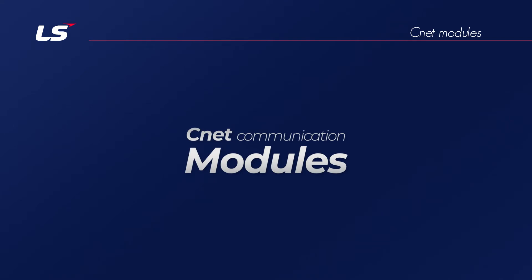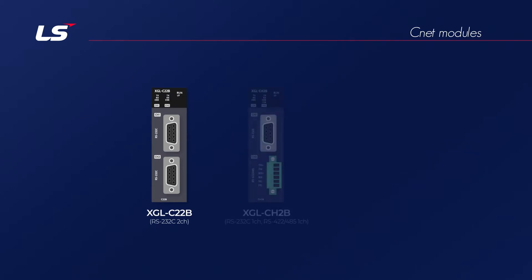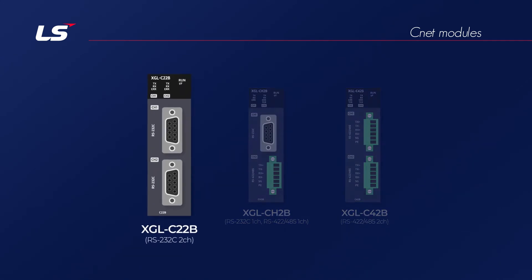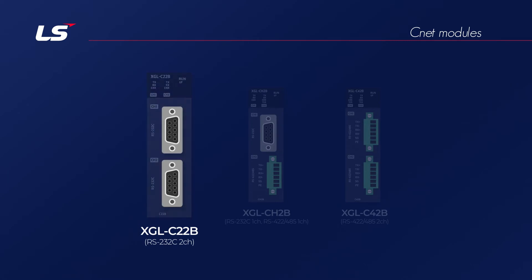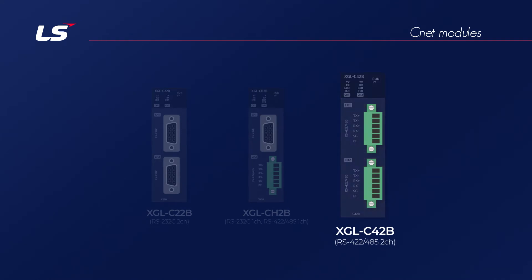There are three types of modules available for CNET communication in the XGT series, which are medium and large PLC types: XGL-C22B, XGL-CH2B, and XGL-C42B. The XGL-C22B module has two ports for RS-232C. The XGL-CH2B module has one RS-232C port and one RS-422/485 port. The XGL-C42B has two ports for RS-422/485.